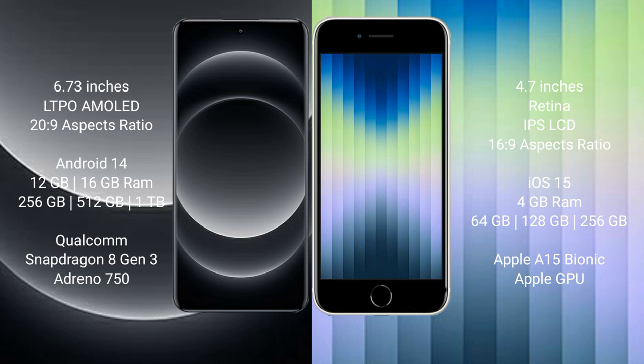The Xiaomi 14 Ultra comes with 12GB or 16GB RAM and 256GB, 512GB, or 1TB internal storage, powered by the Qualcomm Snapdragon 8 Gen 3 processor with Adreno GPU, scoring 29750.